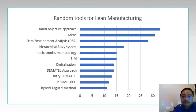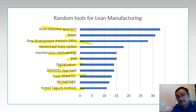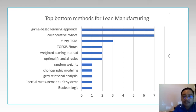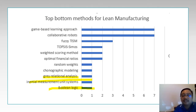Other tools include: multi-objective approach, Arena, data envelopment analysis, hierarchical positive systems, mechatronic methodology, BIM digitization, DEMATEL, and hybrid technology methods. Then the list goes on to the bottom — meaning the least used tools — which are very rare. From 2015 to 2020, only one researcher used: Boolean logic, initial management systems, gray relation analysis, topography modeling, random weight optimal energy ratio, and game-based learning approach.